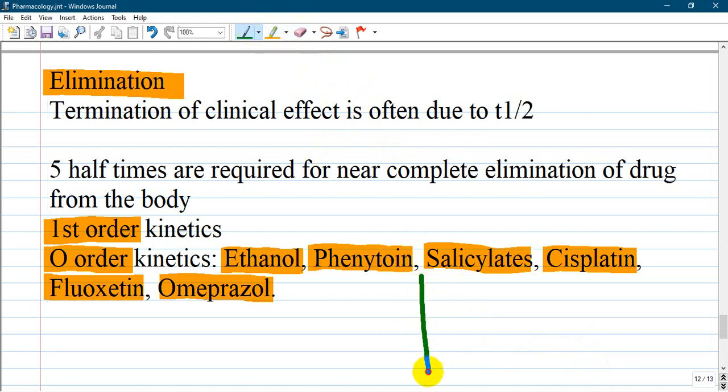First-order kinetics means that the amount of drug eliminated per unit time is proportional to the concentration. Zero-order kinetics means that a constant amount of drug is eliminated per unit of time, independent of what dose you have. It eliminates a constant amount - whether you have 10 mg or 5 mg, it has the same elimination. This is called zero-order kinetic. The first one is dependent on concentration, going by half. If you have 10, it goes to 5. If you have 5, it goes to 2 or less. Most drugs follow first-order kinetics.